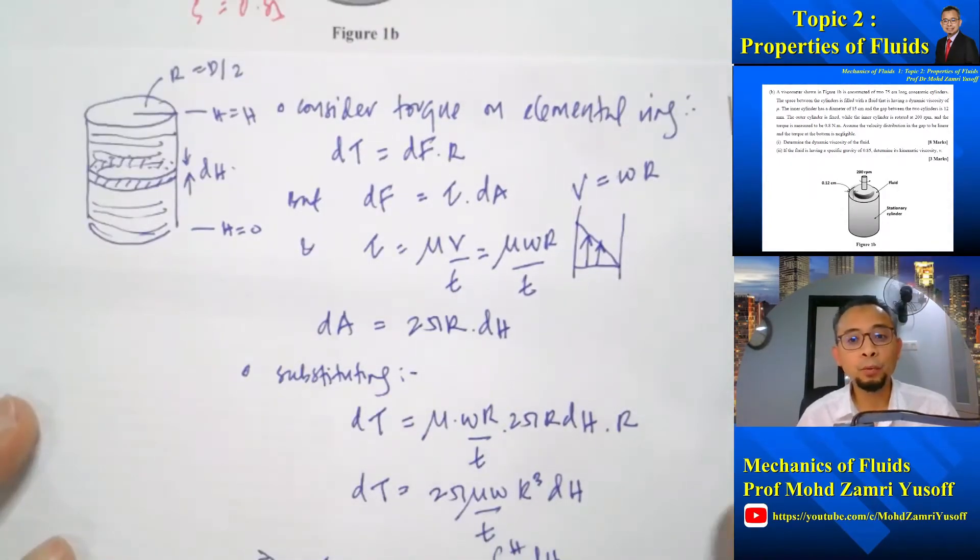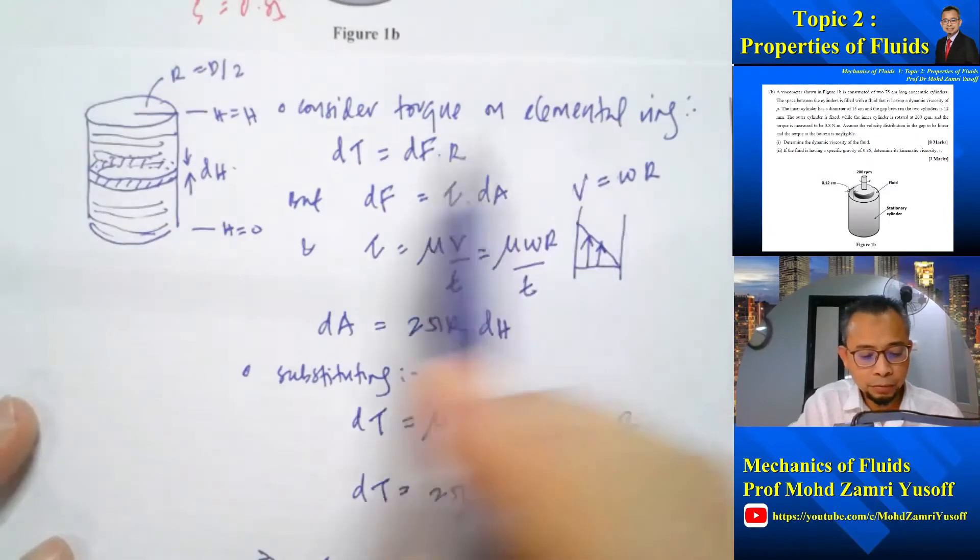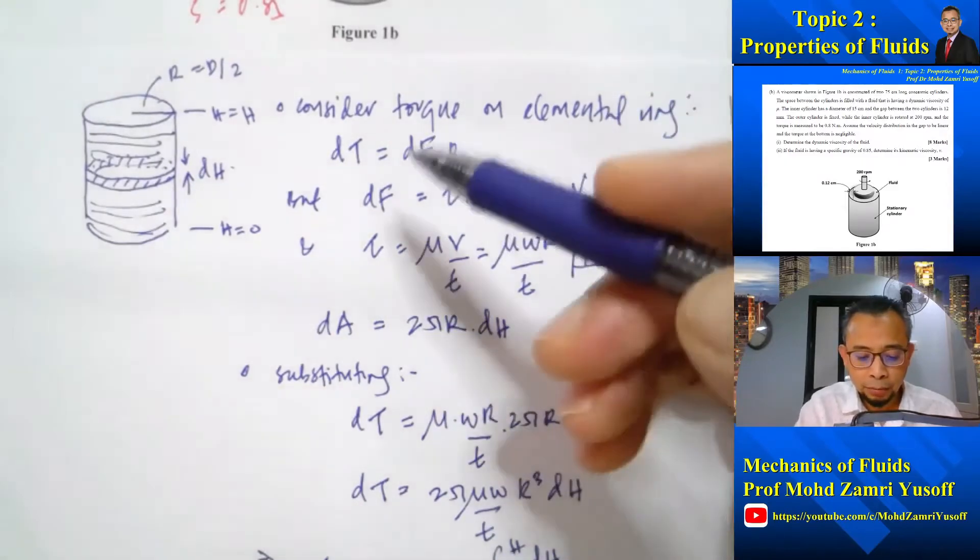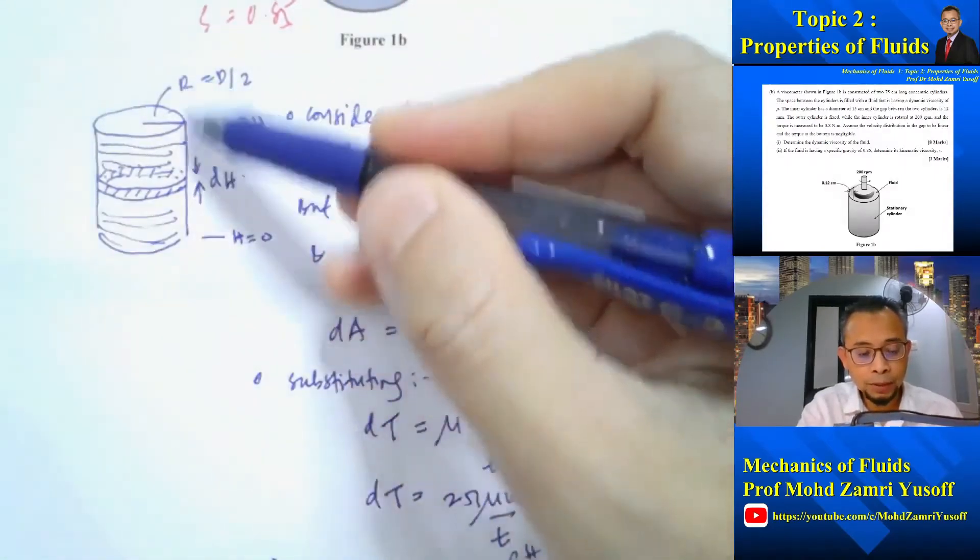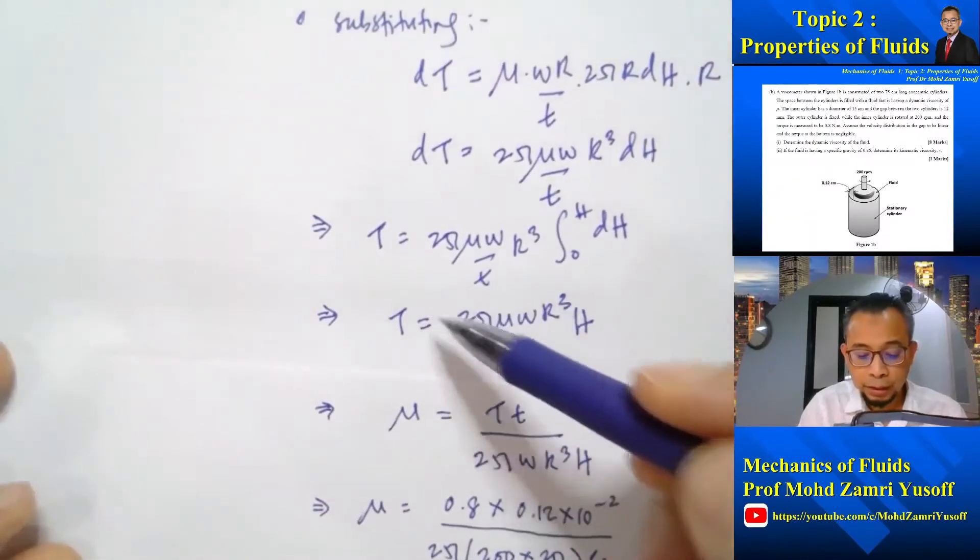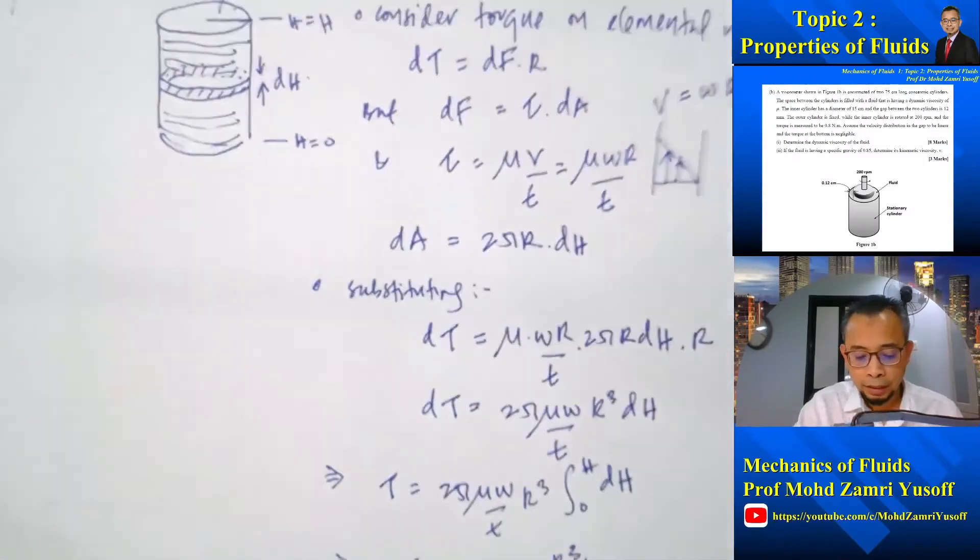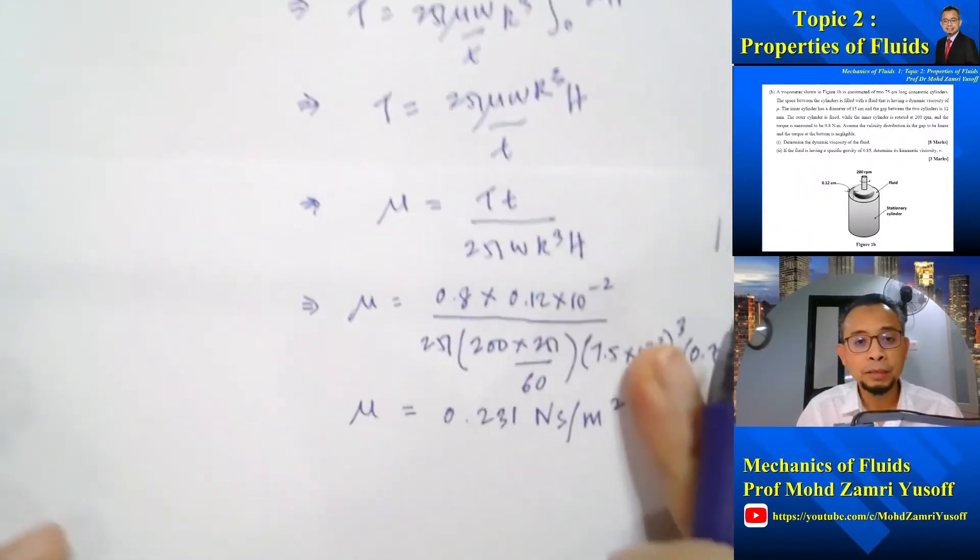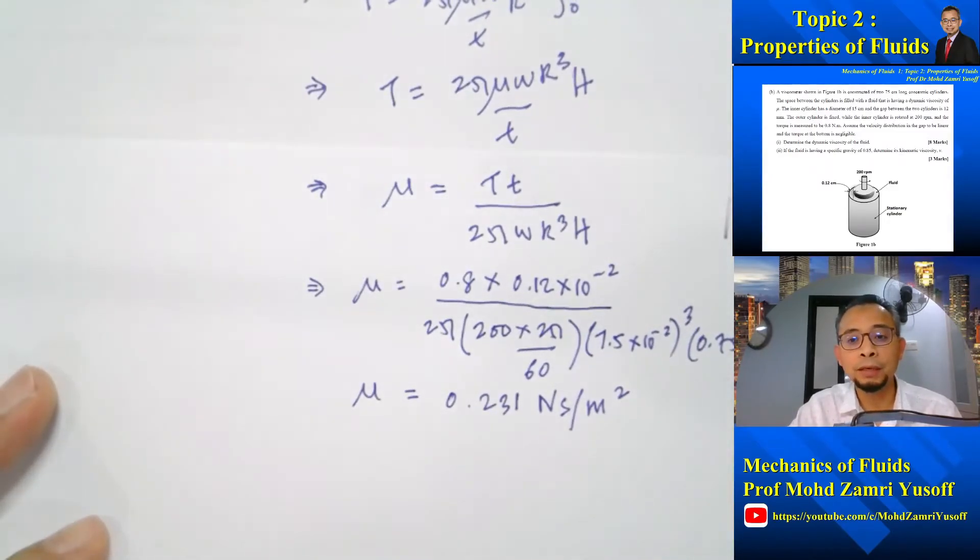So if I recall again what we did just now, consider torque on elemental rings. We just consider an elemental ring element. Then we obtain the expressions for the torque. Then we have to integrate for the whole of the cylinder from H equal to 0 to H equal to H. That gives us the expression for the torque for the whole cylinder. Then we rearrange to get mu and substitute the value, so we get 0.231 Newton second per meter squared.